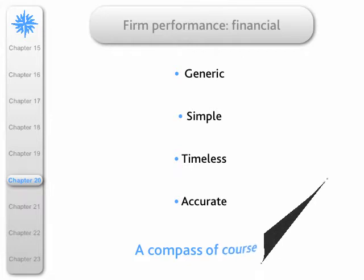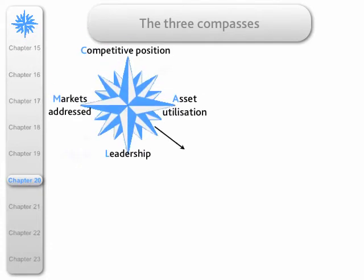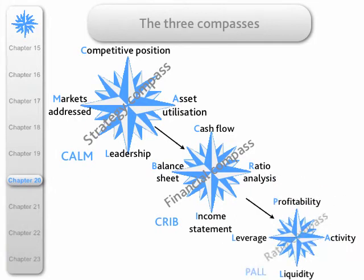I now want to remind you of the strategy compass and introduce two more. Here's the strategy compass with which you should now be familiar: TAM — the letter standing for competitive position, asset utilisation, leadership, and markets addressed. We now have it joined by the financial compass, CRIB — cash flow, ratio analysis, income statement, and balance sheet. And finally, we have that compass joined by PALL — P-A-L-L — profitability, activity, liquidity, and leverage.